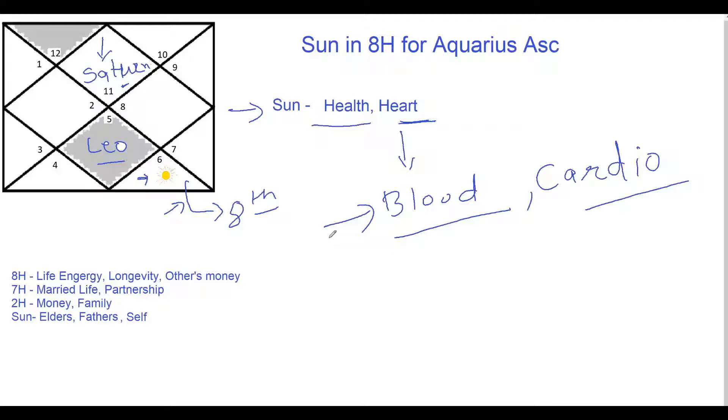So my dear friends this was my quick analysis of Sun in eighth house for an Aquarius ascendant which is in the sign of Virgo. I hope you liked this. Please do like and subscribe to my channel for more such videos and for following this series of planets through various houses and various signs for ascendants. And hope to see you again soon. Bye bye.